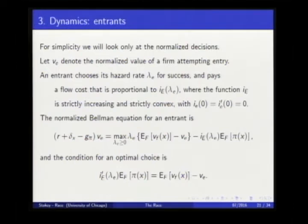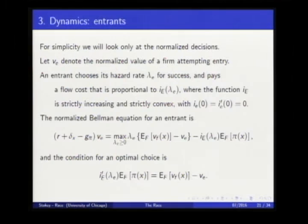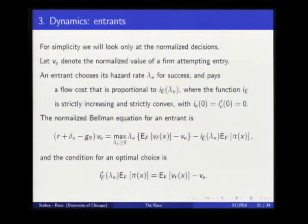For entrants, the normalized decision has an entrant choosing his hazard rate for success. While investing, he pays a real cost for R&D — a strictly convex function of his hazard rate, equal to zero at zero. The Bellman equation for an entrant: he has an active decision to choose this hazard rate. If he succeeds, he gets the difference between the expected value of a draw and his current value, minus the flow cost, offsetting interest, depreciation, and the fact that the whole economy is growing. This gives a first-order condition for the hazard rate.